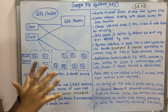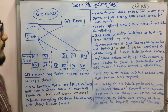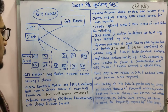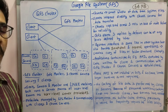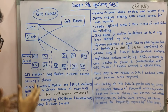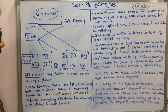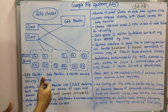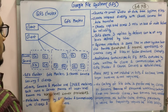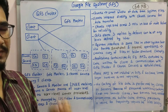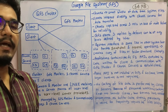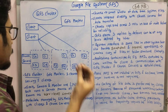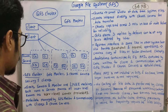This setup of a GFS master, clients, and a set of servers is called a GFS cluster. The client servers and masters all run on Linux machines, and each runs a server process at user level — these are known as user-level server processes.